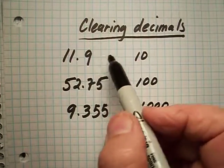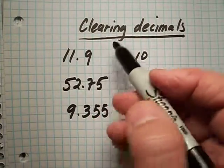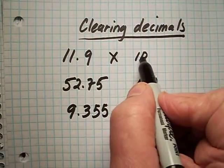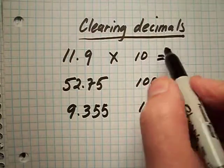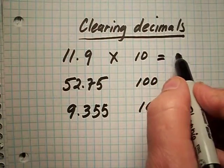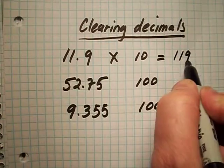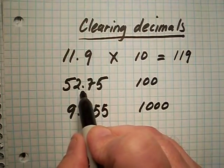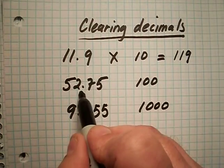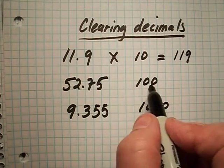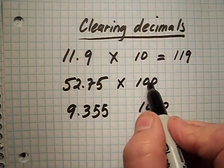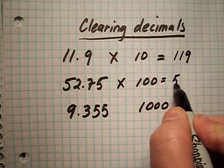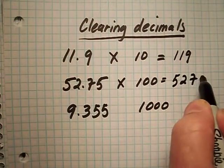The way to clear our decimal is to multiply. For example, 11.9 is one digit away, so you multiply by ten, and your final answer would be 119. For 52.75, two digits away from the decimal is hundredths, so multiply by one hundred, and your final answer would be 5275.